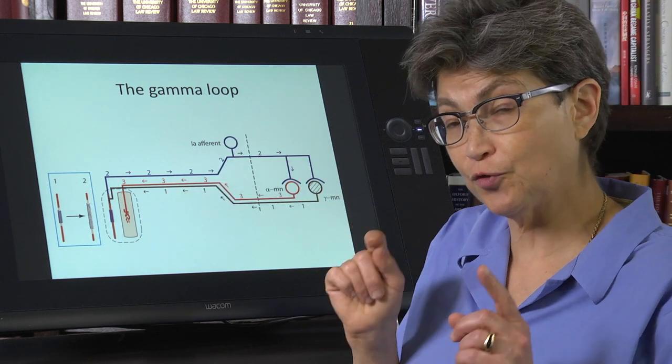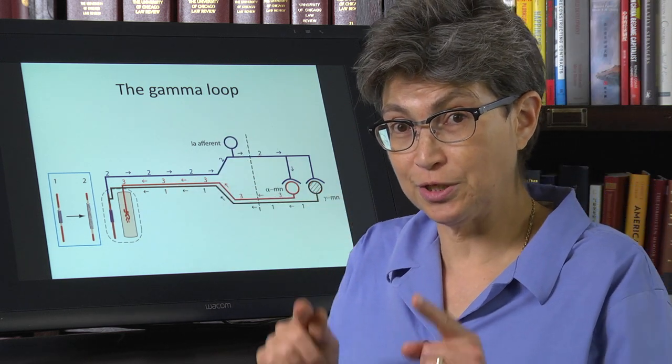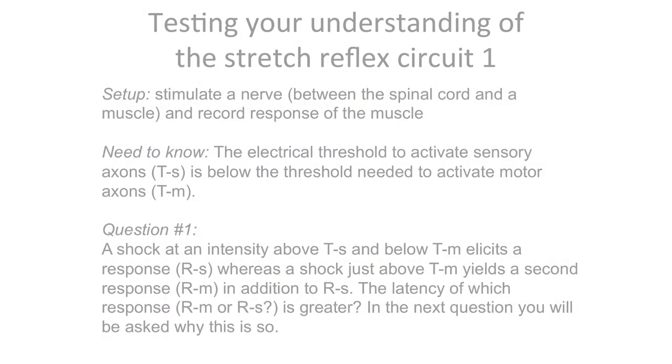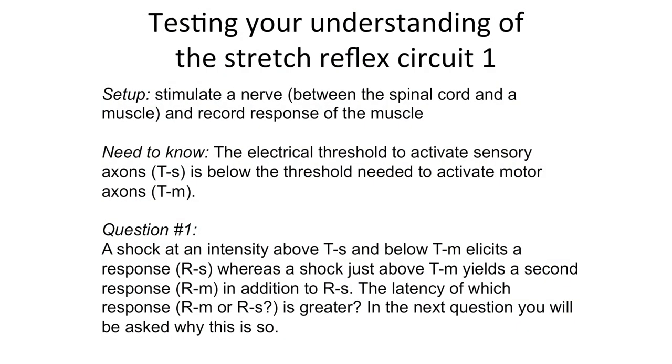And your first question that I want you to answer is, which happens first? So at an intensity where both motor and sensory fibers are activated, and there is a motor and a sensory response, which one is quicker to happen? Which one has a shorter latency? Does the motor response happen before the sensory response, or is it vice versa?